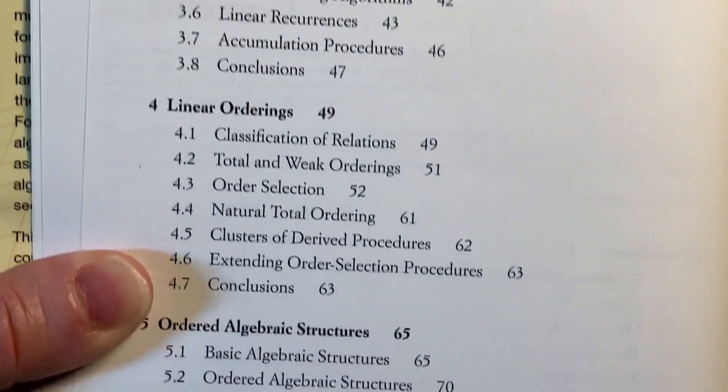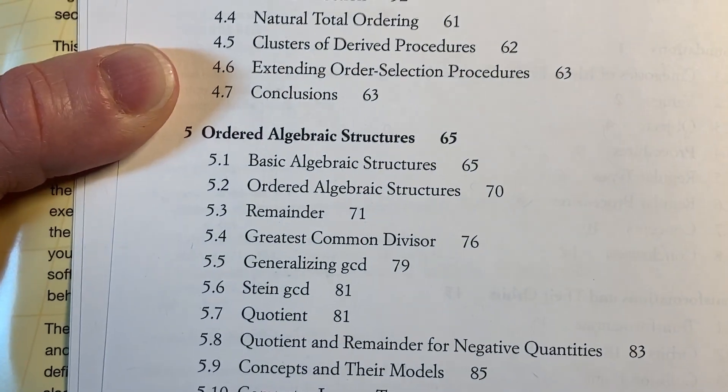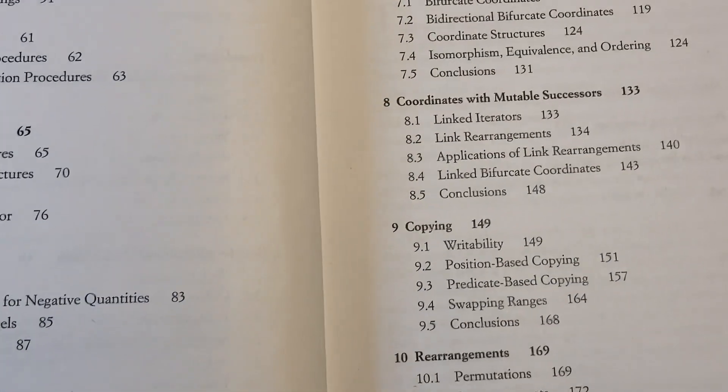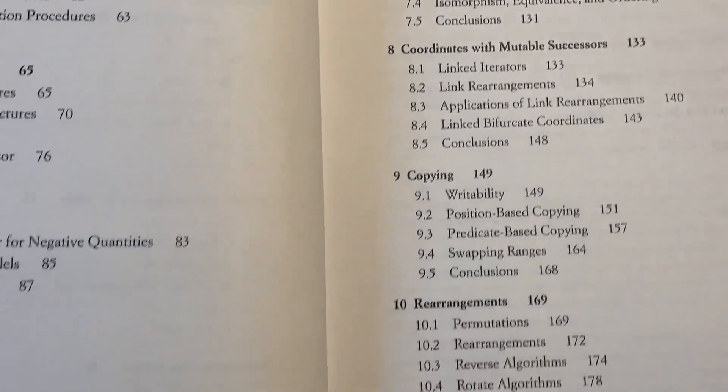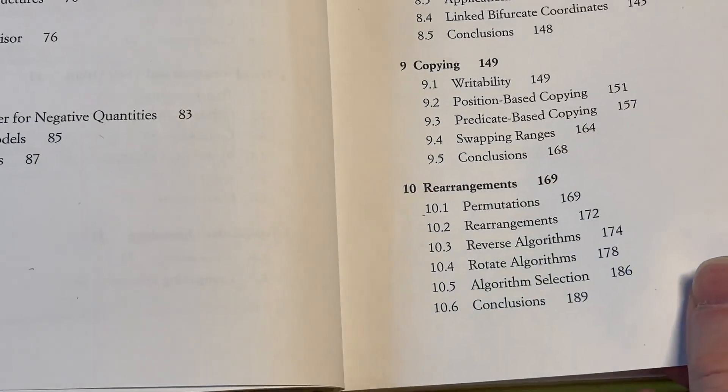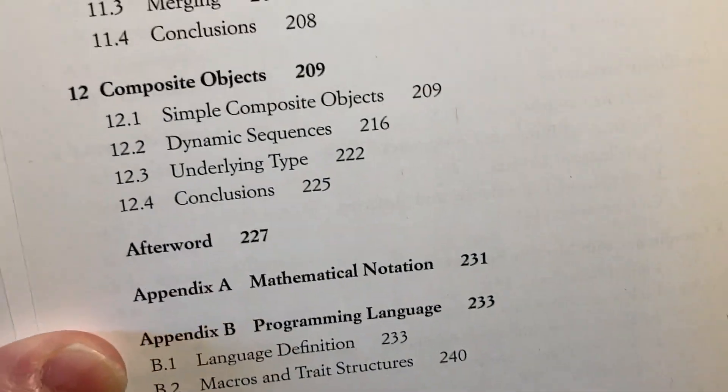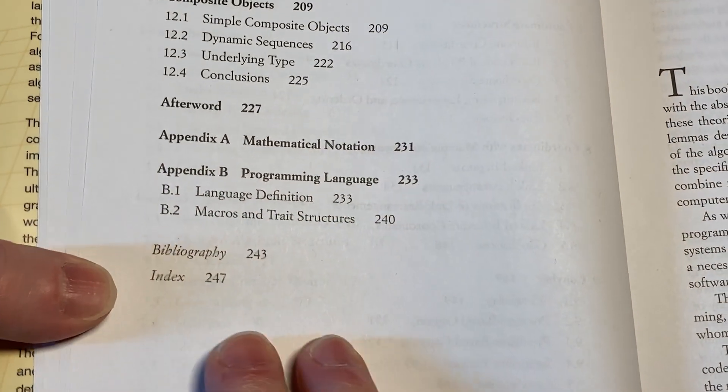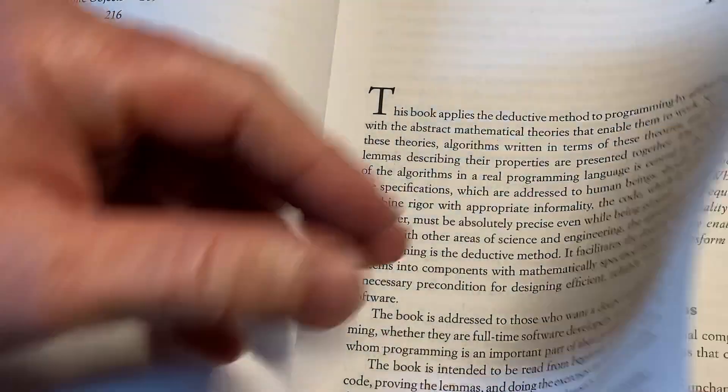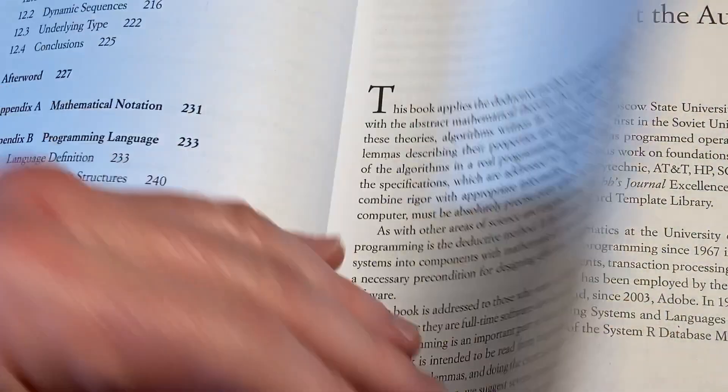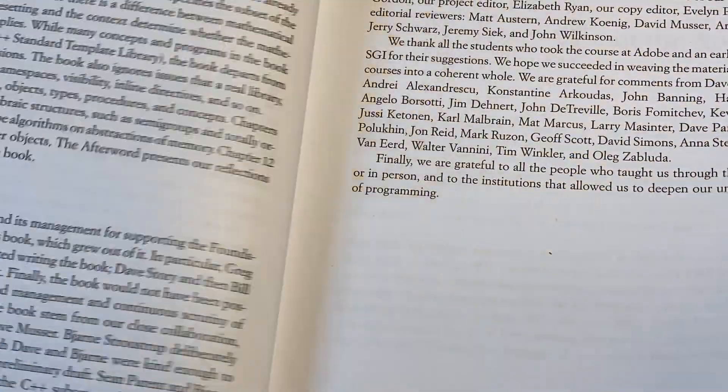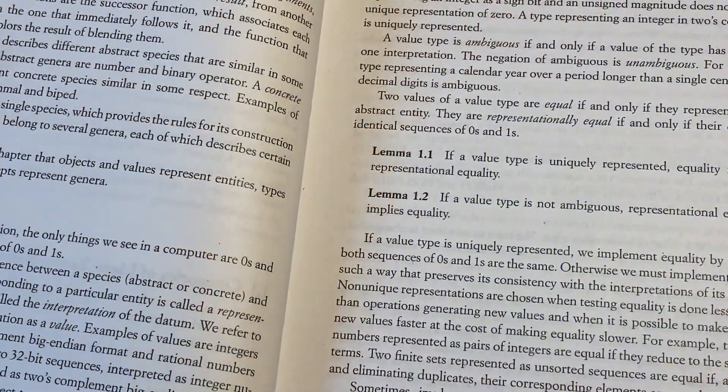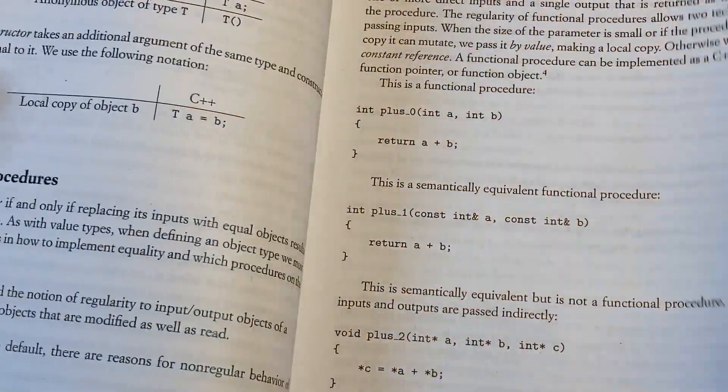Linear orderings, ordered algebraic structures, iterators, coordinate structures, coordinates with mutable successors, copying, rearrangements, and then we have partition and merging and composite objects. There's an afterward and some appendices, a bibliography and an index, and it has a preface. And then here is where it starts—foundations. This is an interesting book.